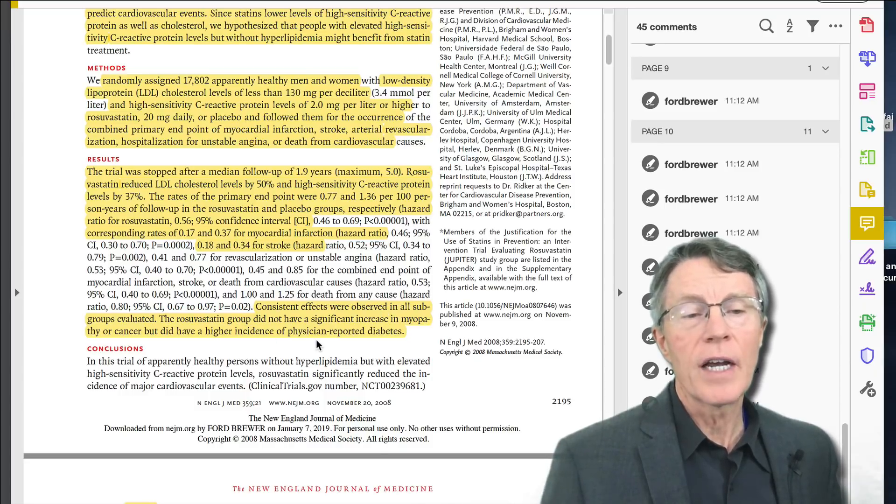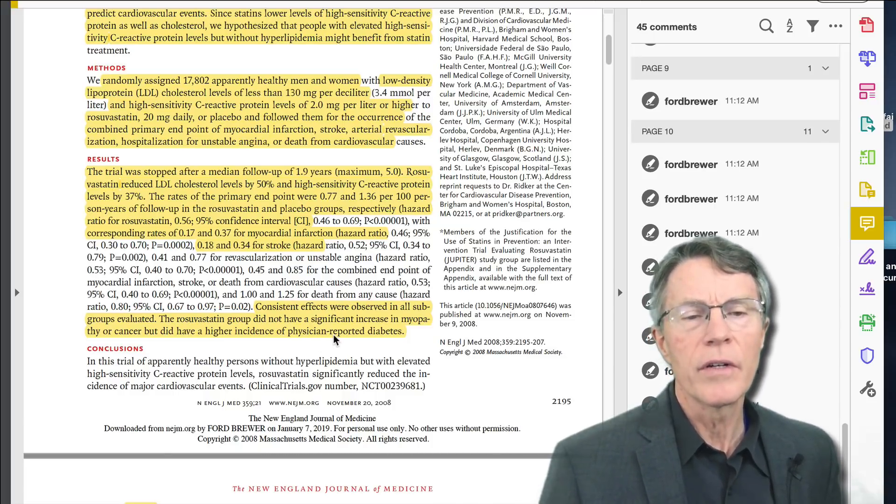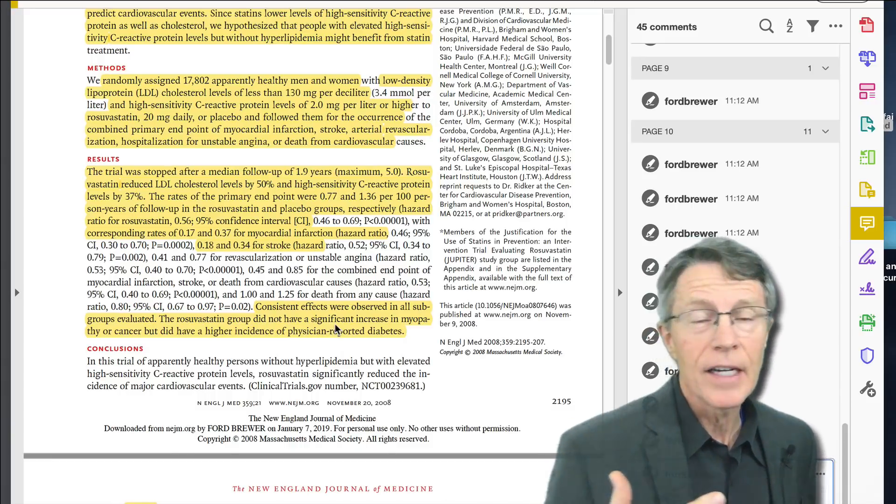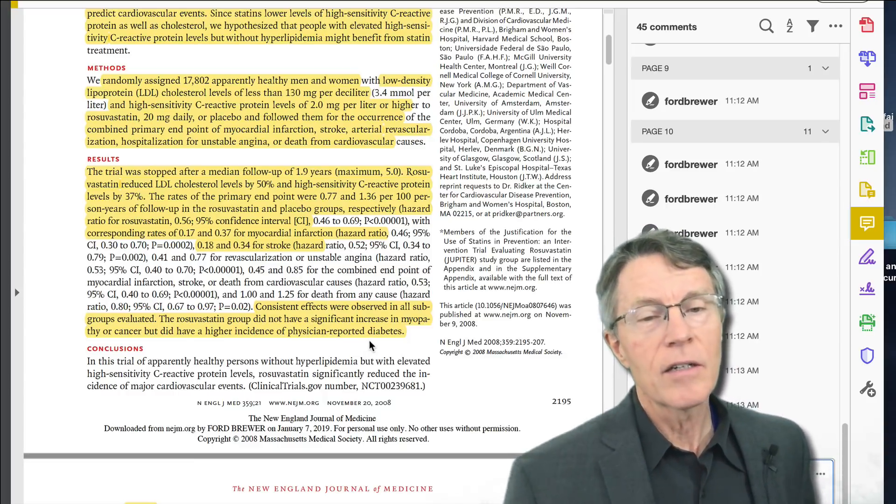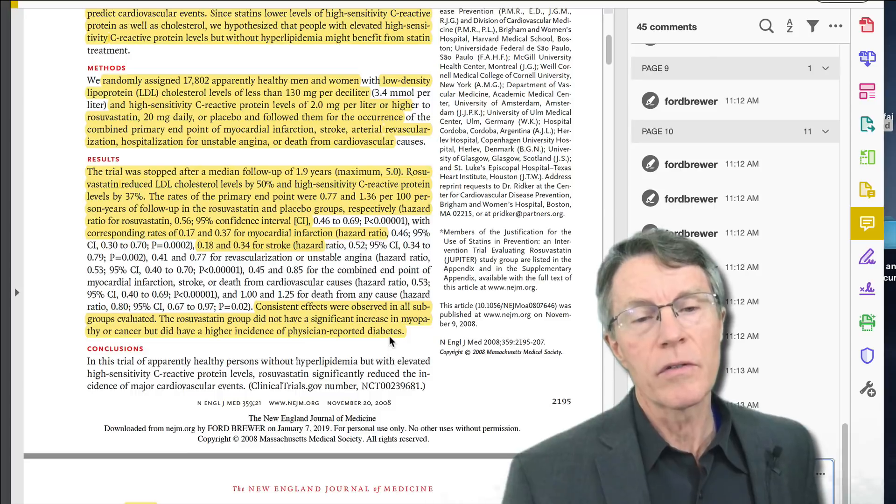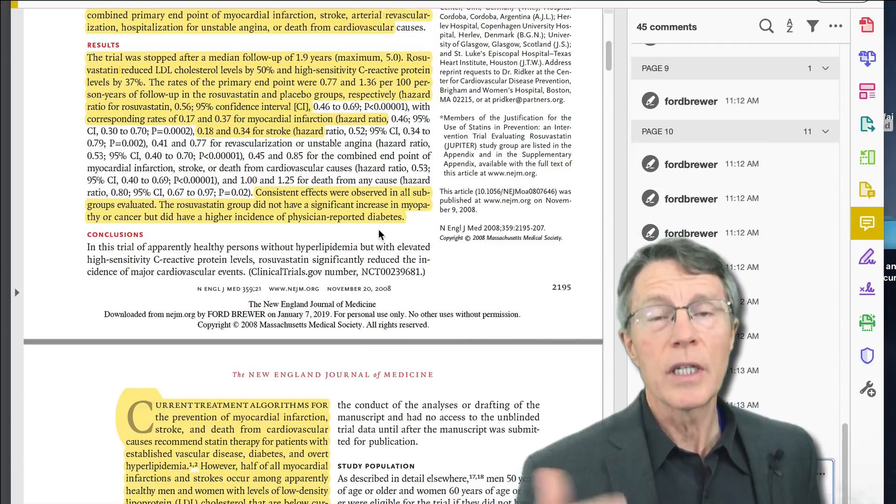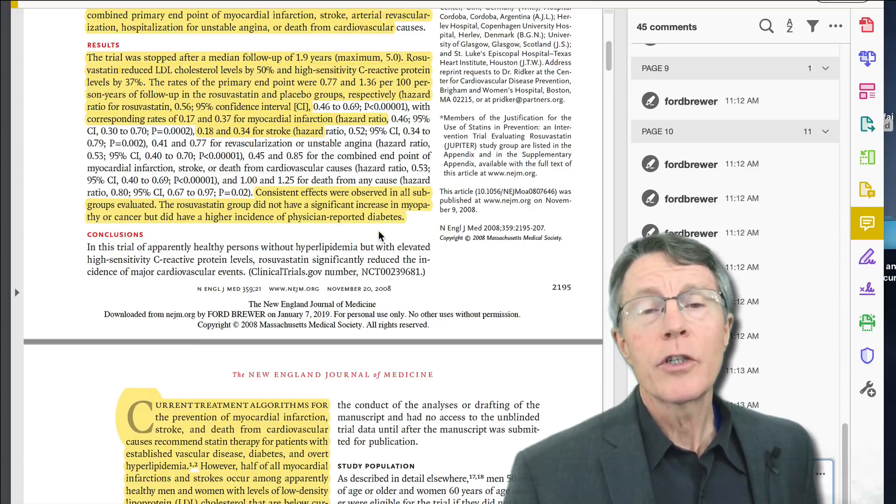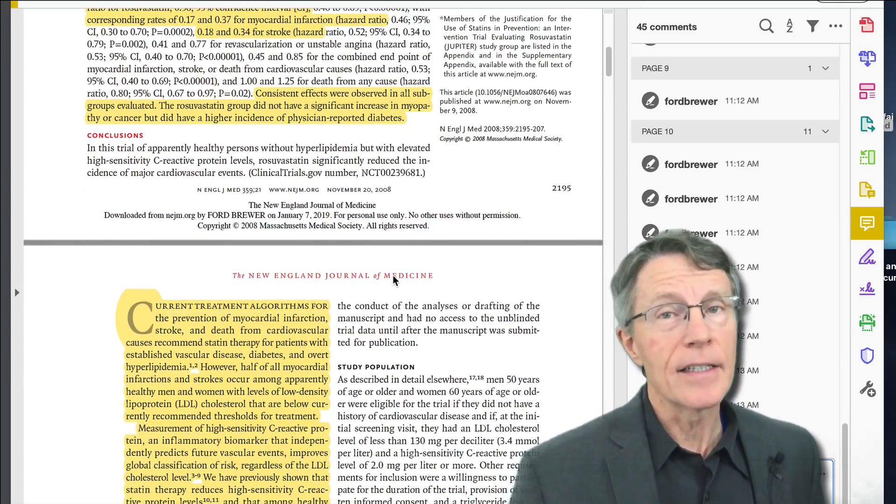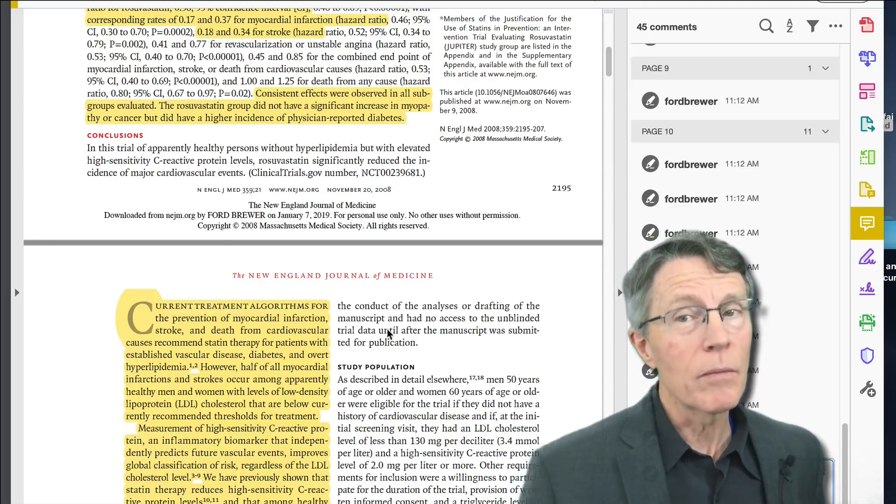So corresponding rates of myocardial infarction or heart attack were 0.18 versus 0.34. So again, major drop in heart attack and stroke risk. Consistent effects were observed in all subgroups evaluated and we'll talk about that a little bit because I'm going to go into the detail on this study. It's a critical study to know if you don't know it. Rosuvastatin group did not have significant increase in myopathy. What about the side effects? They didn't have that. They didn't have a higher incidence of physician reported diabetes but really not so much. Even with the 20 milligrams of Crestor and as we've seen more recently, you can go much lower and probably should. I usually will start patients that are really hot on about 5 milligrams per day and as we get patients calmed down, we get them to like 2.5 milligrams twice a week.